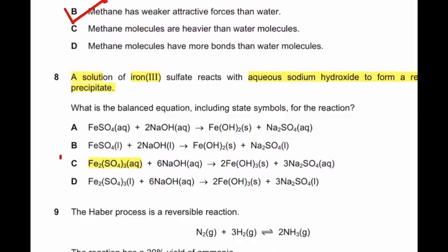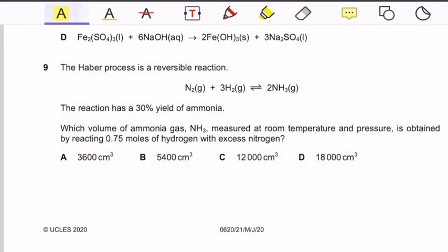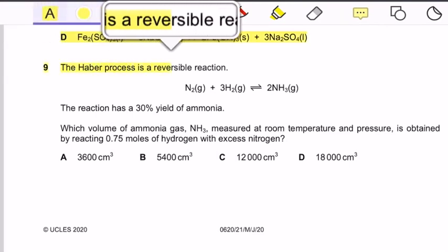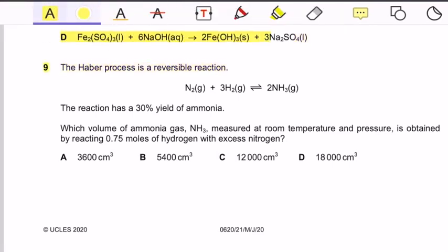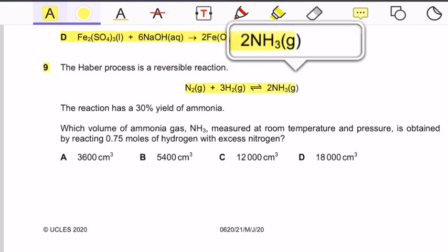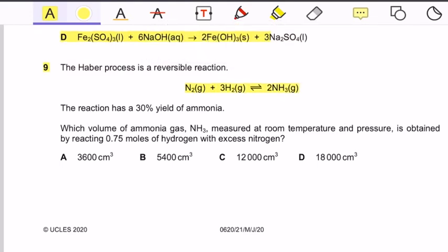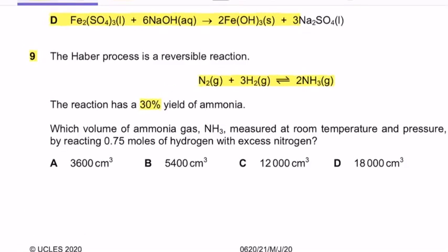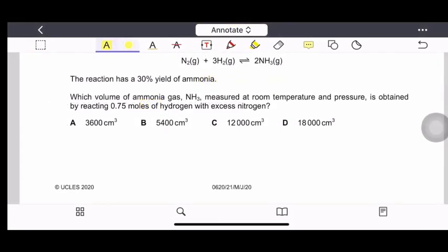Question number 9: The Haber process is a reversible reaction. Nitrogen plus 3 moles of hydrogen make 2 moles of ammonia by reversible reaction. The reaction has 30 percent yield of ammonia. This information is very important. We have to consider in the question. Which volume of ammonia gas measured at room temperature and pressure is obtained by reacting 0.75 moles of hydrogen with excess nitrogen?